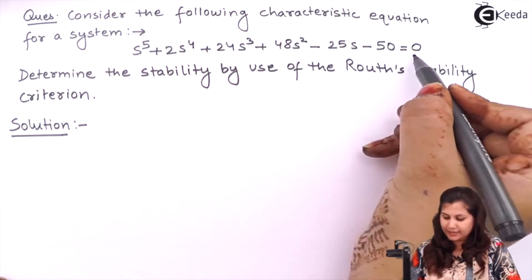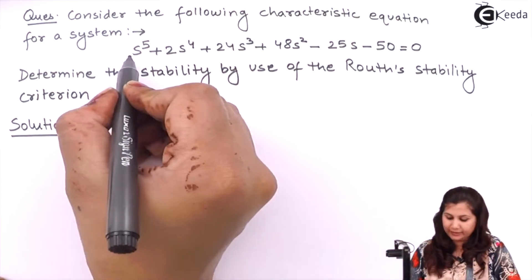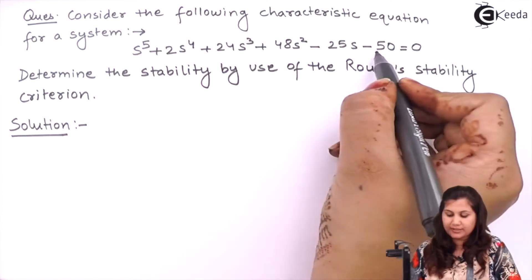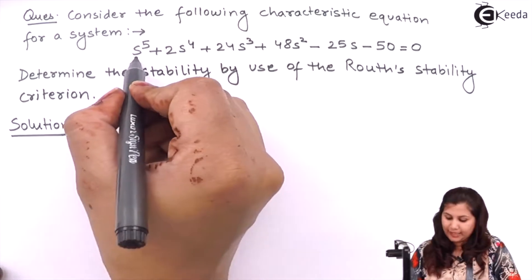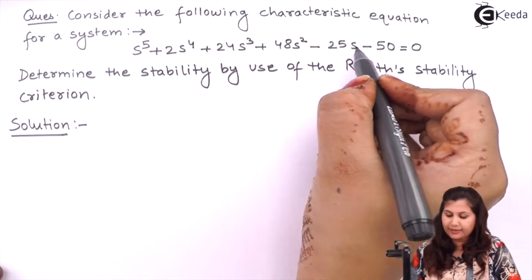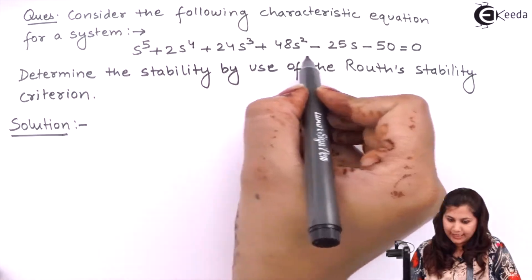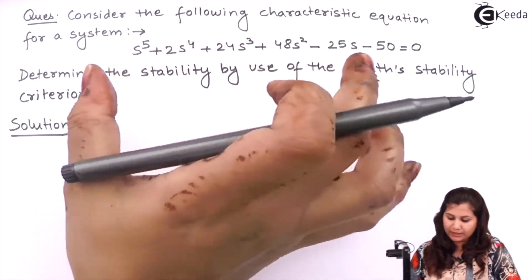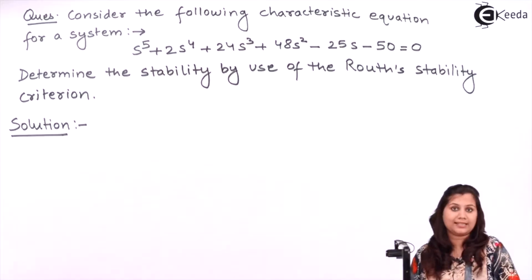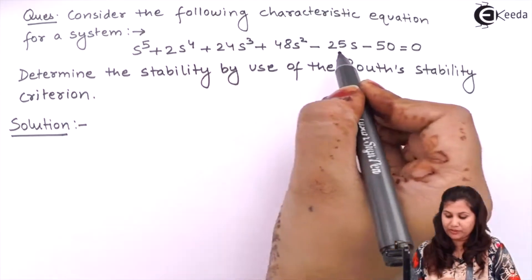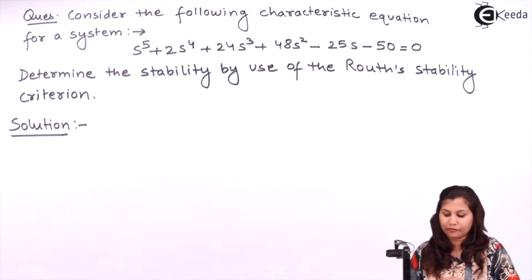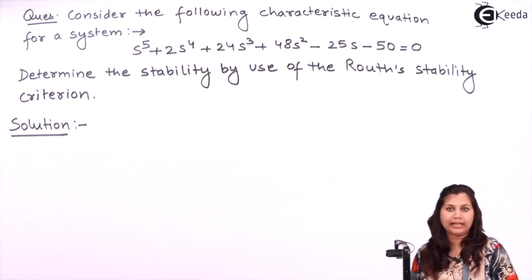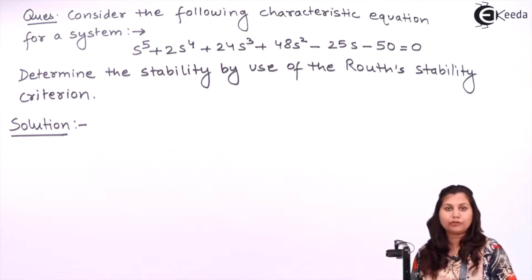Now if you see this characteristic equation, you will see that all the coefficients are not having the same sign — these are positive and these are negative. So from this equation you can say that the system is unstable because all the coefficients are not positive or not negative. But we have to prove this using the Routh stability criteria.